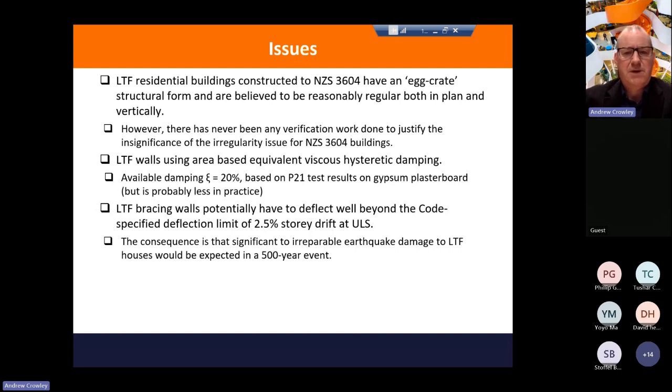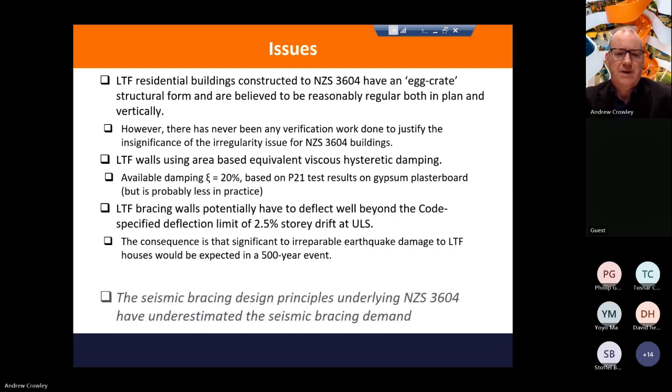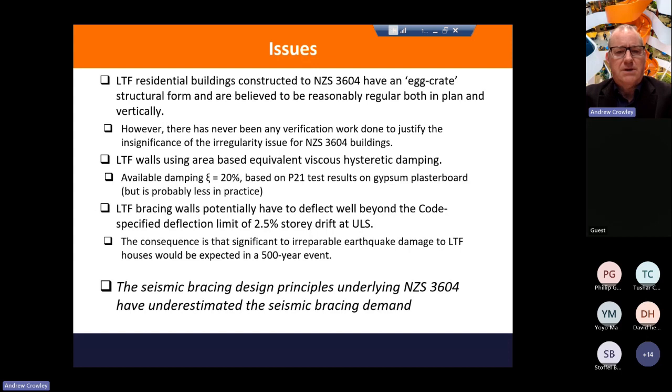But think about it. The plasterboard is relatively easy to replace. Once it's clad, the steel frame is not so easy to replace. And the Branz document argues that the seismic bracing principles underlying 3604 may have underestimated the seismic bracing demand. However, 3604 also ignores coupling of short walls. So potentially the longer walls are much stiffer than the shorter walls and a series of short walls are just added together. Whereas if you've got, for example, a doorway, you will have a coupling effect between the two walls if you've got a decent header or spandrel over that door.